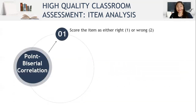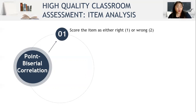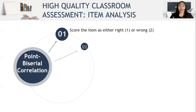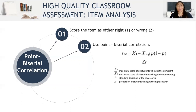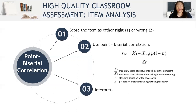The next method is the point biserial correlation. In this method, first, score the item as either right or wrong. Next, use the point biserial correlation formula. And lastly, interpret the result.